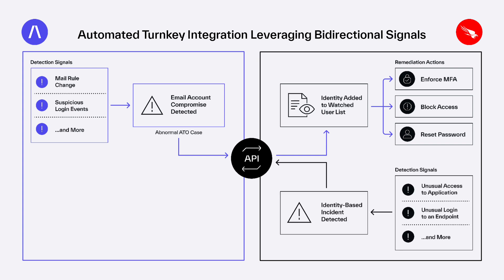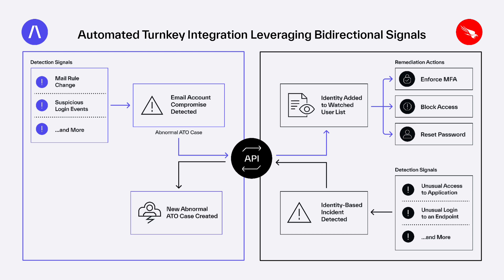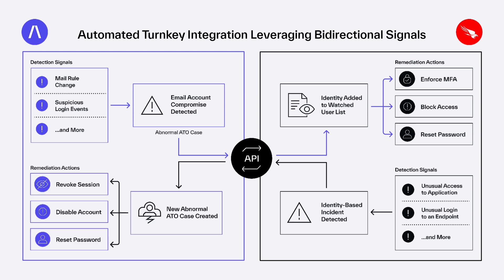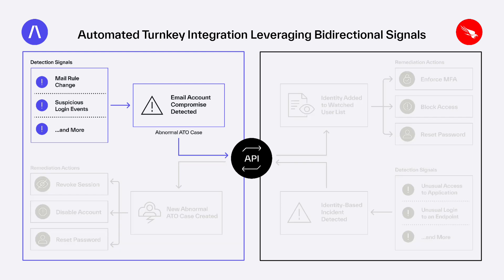The watched user list can be configured to allow analysts to contain hosts or force re-authentication on an endpoint device. When CrowdStrike's identity protection platform creates a new identity-based incident, it creates an account takeover case within the Abnormal platform. Security analysts can quickly remediate the email account by logging users out, terminating the session, or forcing a password reset.